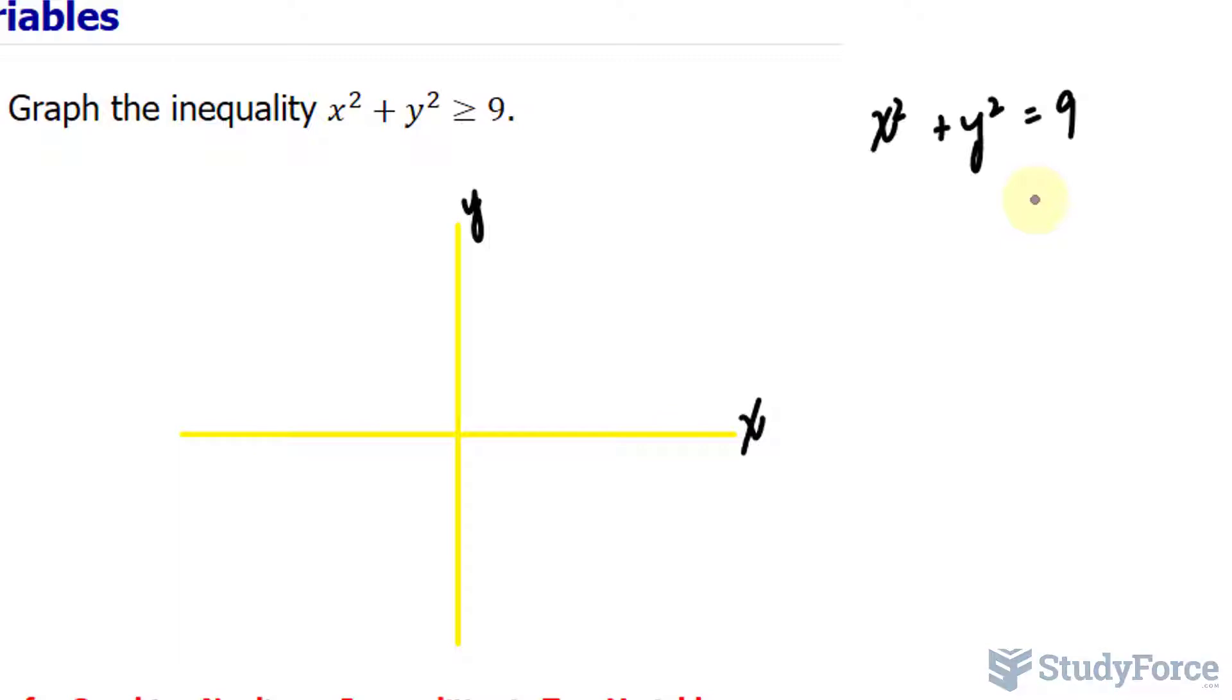And if we square root this number, we actually get the radius for the circle. So the square root of 9 happens to be 3, and that's the radius that we'll be using.